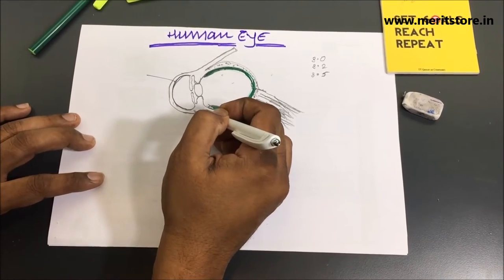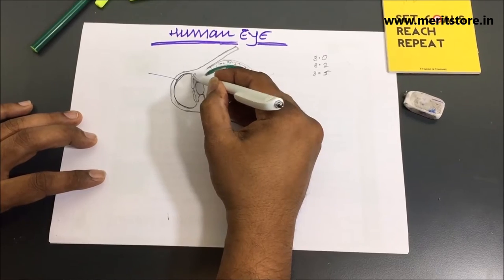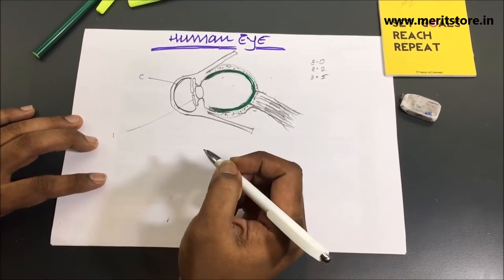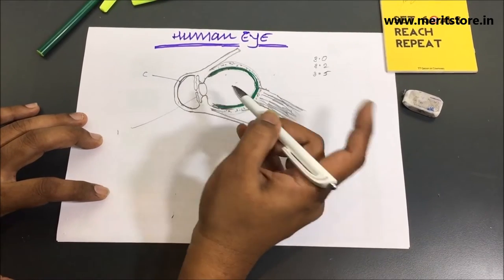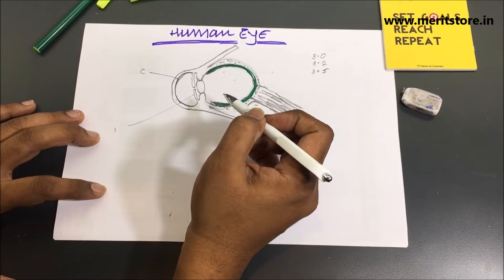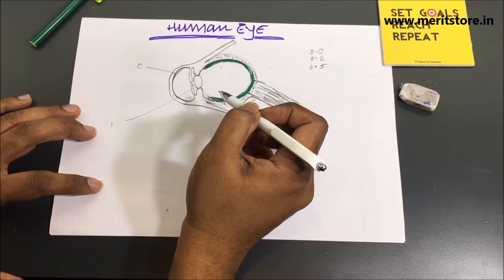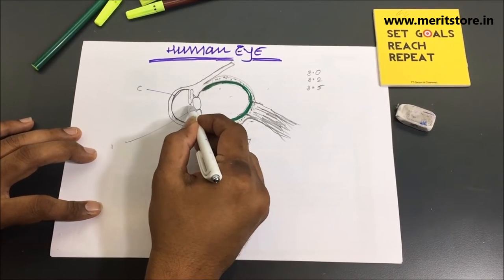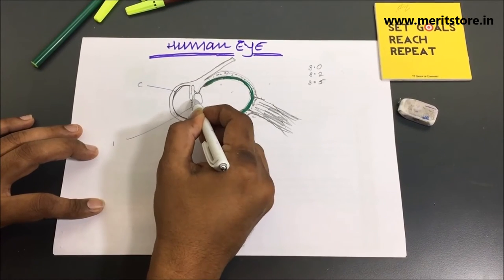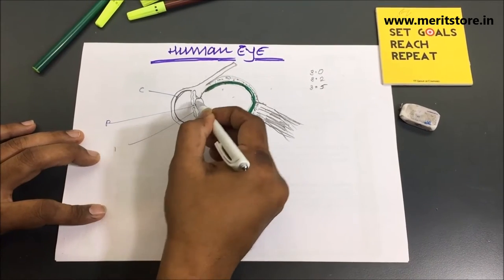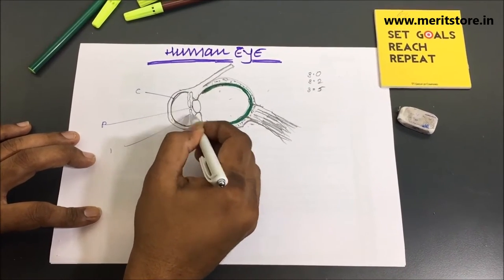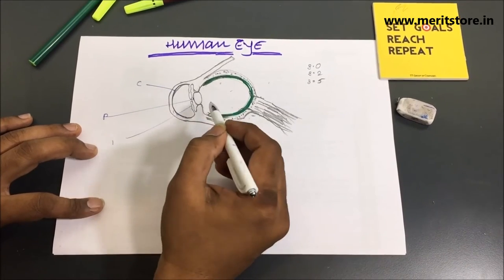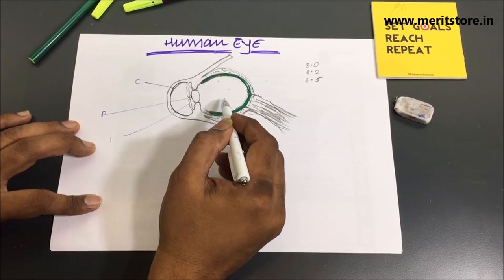Behind the cornea is a dark muscular diaphragm called the iris. The color of iris is different for different people — some people have blue eyes, some have green eyes, and most would be brown or black. The iris has a small opening of variable diameter. What you see of the lens through this opening is called the pupil. The pupil is useful to control and regulate the amount of light entering the eye.